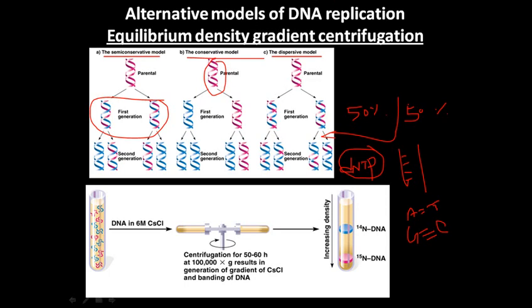There is another model called the dispersive model. This model tells us that the first generation DNA is made up of hybrids, but in this case the hybrids are not like one strand conservative and the other new — not like that. Instead, there are splotches of new and old strand material mixed together throughout the strands.